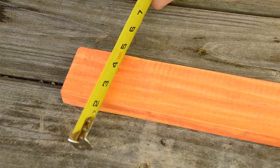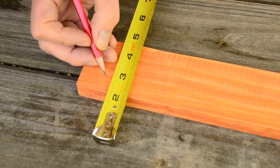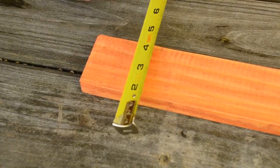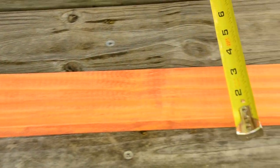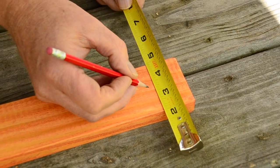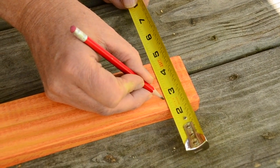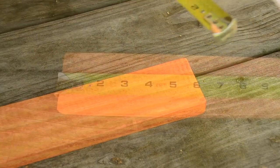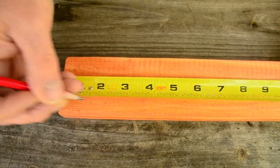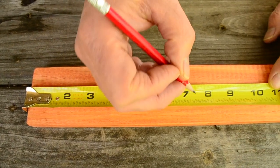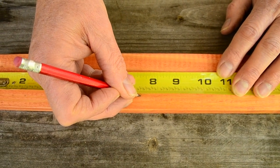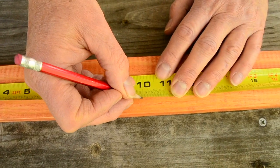This step can either be done before or after the furring strips are joined together. On one of the furring strips we will make a mark a half an inch from the edge of one of the long sides. Line up a tape measure or a ruler along your half inch marks and then make a mark at two inches, seven and a quarter inches, ten inches,